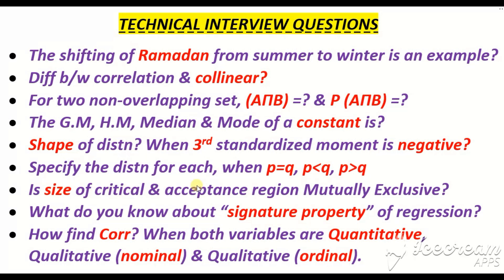Are the critical region and acceptance region mutually exclusive? In hypothesis testing, you have an acceptance region and a critical region, also known as the rejection region. These are definitely mutually exclusive, because when you compare the calculated value, it will either fall in the acceptance region or in the critical region — it cannot belong to both regions simultaneously. So it is very important to note that both regions are mutually exclusive and non-overlapping.